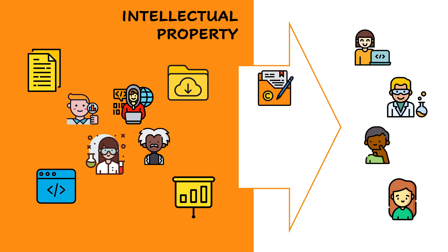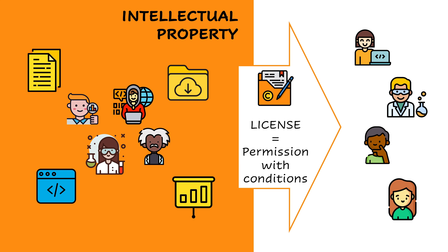A license is what allows other scientists to use our material and lets us define the conditions. If we do not provide a license, potential users do not know whether they can use our material and under what conditions. So, in simple words, even if we put code or data on GitHub, Zenodo, or any other repository, this material cannot be used by anybody else if we do not add a license.